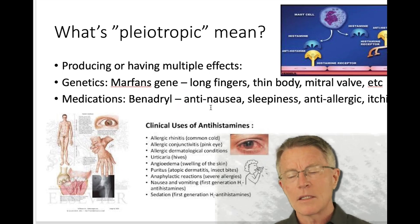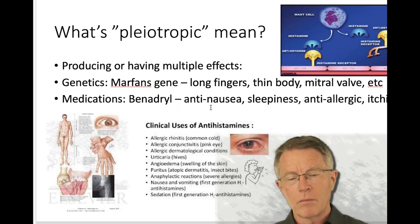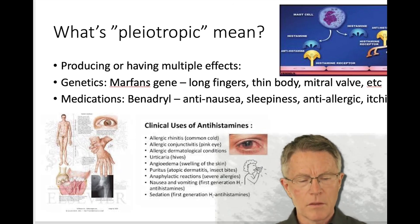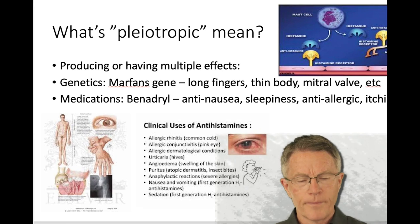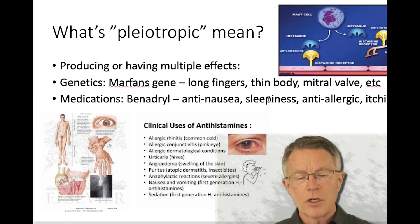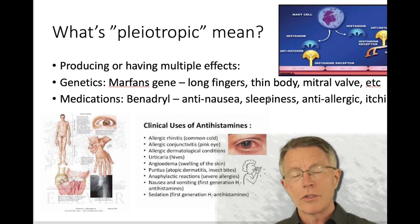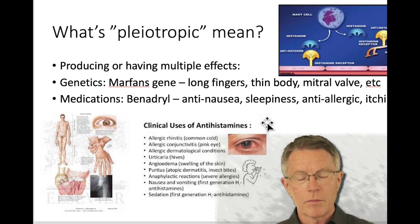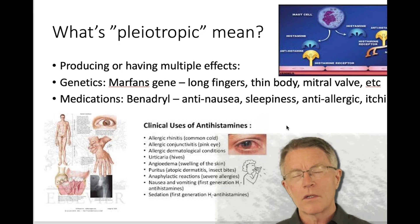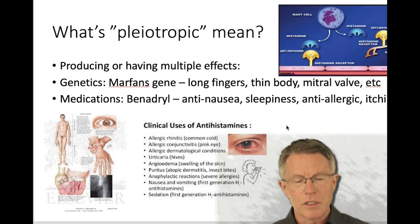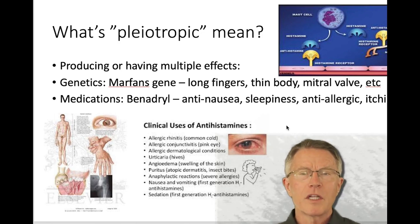Let's understand pleiotropics just a little bit more. Pleiotropic, if you look it up on Google: producing or having multiple effects. One of the key places that we see this in medicine is in genetics — we have pleiotropic genes.